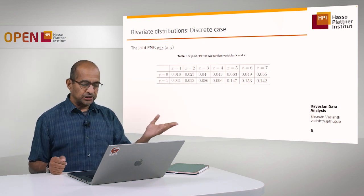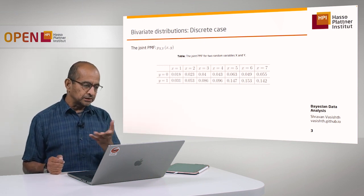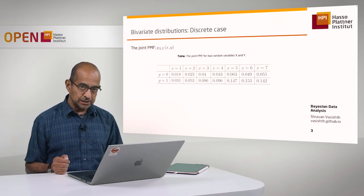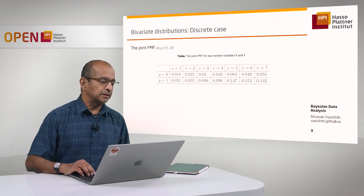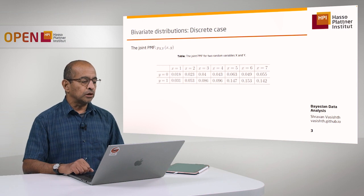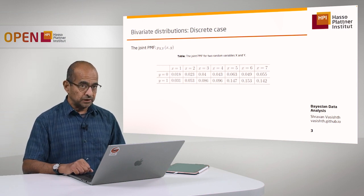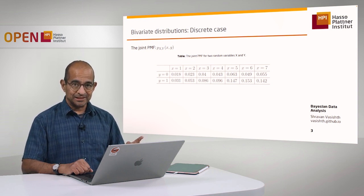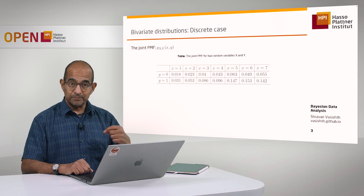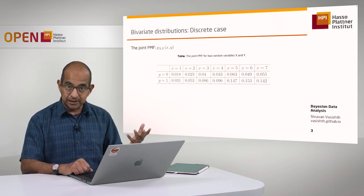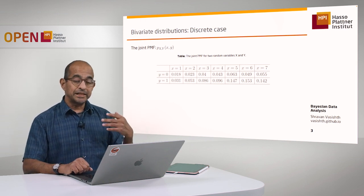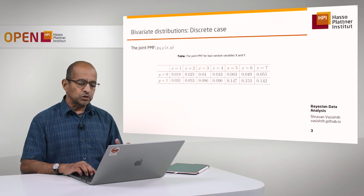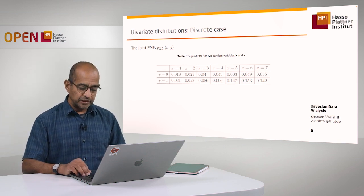On the rows you see the 0/1 responses and the probabilities of those for each of the Likert responses ranging from 1 to 7. This we are going to call the joint probability mass function of these two random variables — they are both discrete random variables, that's why I'm saying joint probability mass function. If they had been both continuous random variables, then this would be a joint probability density function.